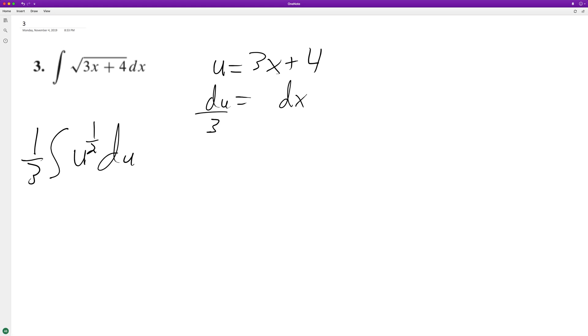So we can go ahead and integrate now. So we get 1 3rd u raised to the 1 half plus 1 over 1 half plus 1 plus c.